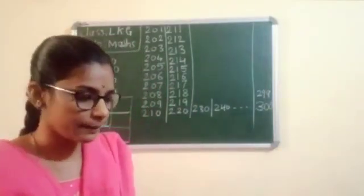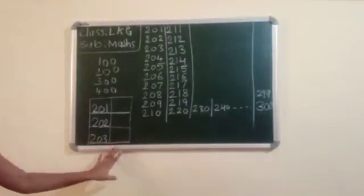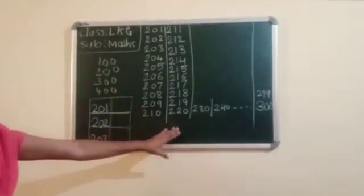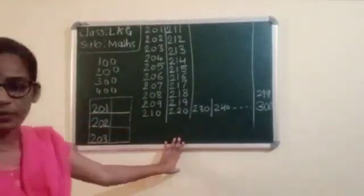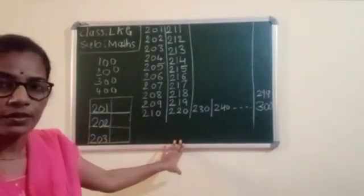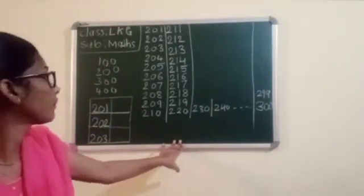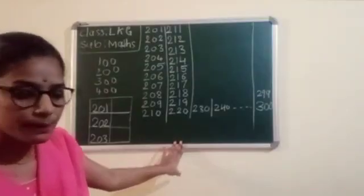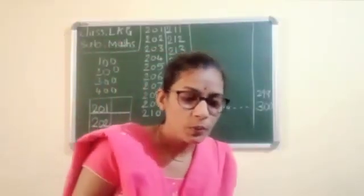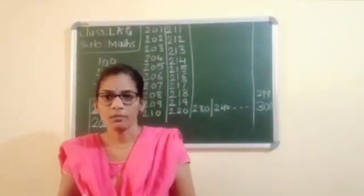Okay children, now when you write 100, 200, 300 — numbers are completed. Next, I am going to teach about number names. Look at here: number names. You already know 1 to 20 number names.